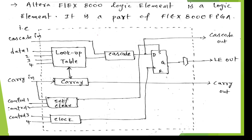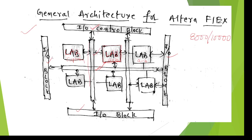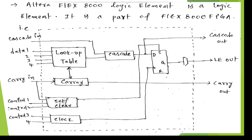Internally, the UltraFlex 8000 FPGA contains a logic element. This logic element has a lookup table, flip-flops, and a multiplexer (MUX). The lookup table contains the required logic functions. There are data lines: data line one, data line two, data line three, and data line four representing different tasks.